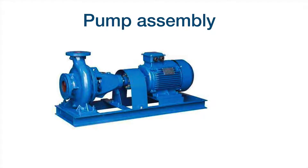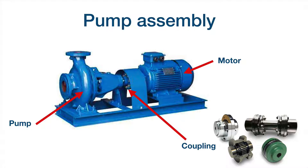Here we have a centrifugal pump driven by an electric motor. This is an end-suction type of pump, foot-mounted, because the supports are located at the foot of the pump. We also have the motor — as mentioned, an electrical motor. We can also have any other kind of driver such as a gas turbine, a steam turbine, or hydraulic drive. Here we have the coupling and the base plate, which supports both the pump and the driver.